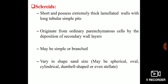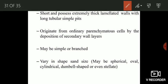Let's move on to some of the important distinguishing features of sclereids. Sclereids are short cells which possess extremely thick laminated walls with long tubular simple pits. Here you can see, I will make a diagram. These are short cells, relatively short cells as compared to fibers that we have discussed in the previous part. And their walls are extremely thick.